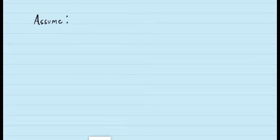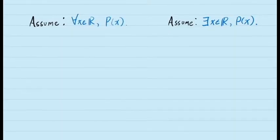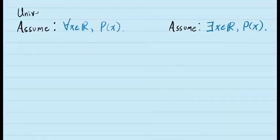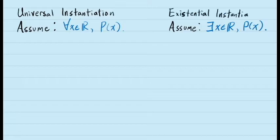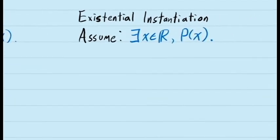The next thing to look at is what happens when an assumption we make includes a quantified statement. In other words, what happens when we're assuming a real number exists, or what happens when we're assuming a statement is true for all real numbers. In these situations, there are two other logical principles that we need to appeal to. These are called the instantiation principles: existential instantiation, when we're assuming something with an existential quantifier, and universal instantiation, when we're assuming something with a universal quantifier. To begin, let's talk about the principle of existential instantiation.